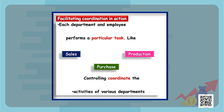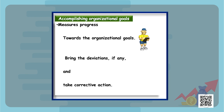Now let's discuss the benefits of controlling. The first benefit is that it facilitates coordination in action. Each department and employee performs a particular task — like sales, purchase, and production — and controlling serves as a coordination technique between all these departments. It also helps in accomplishing organizational goals by measuring progress, bringing out deviations, and helping take corrective action effectively and efficiently.